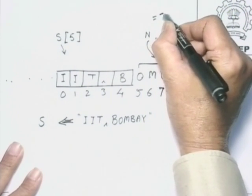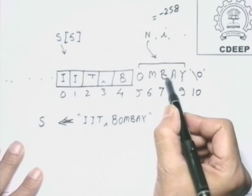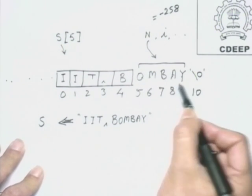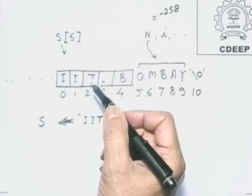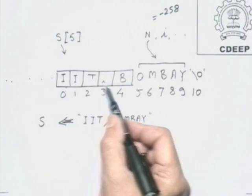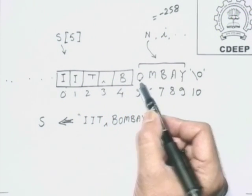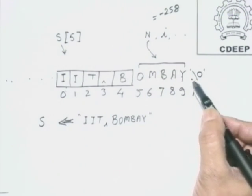This is not a characteristic of Turbo C — it could happen in any implementation of C because C does not check ranges of arrays. Suppose those overflow locations were actually allocated to an integer variable N with value minus 258. Then that value will get obliterated when I write 'o', 'm', 'b', 'a', 'y', backslash 0 into those locations. Writing is permitted by C. And any C program which tries to read the string will start at index 0 and look for backslash 0. It will find no backslash 0 at the original string boundary, but will find it at index 10 and therefore read 'IIT Bombay' correctly.